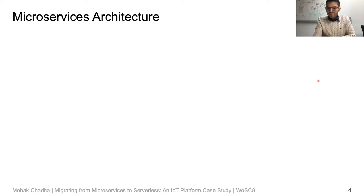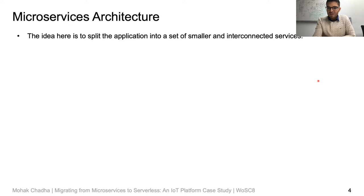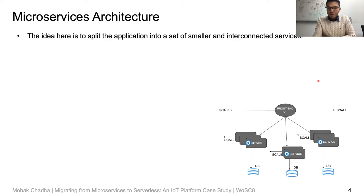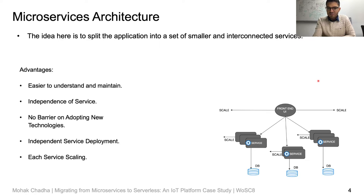Most cloud-native applications today are based on the microservices architecture. This type of architecture enables the development of an application as a suite of small independent services communicating with each other. It has several advantages. First, the application is decomposed into a set of manageable services which are faster to develop and easier to understand. Second, each service can be developed independently by a team focused particularly on that service. Third, a particular service is not bounded to a set of technologies. Finally, each service can be deployed and scaled independently.